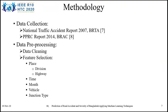Data collection was one of the most difficult tasks. Very few websites provide data on accidents in Bangladesh. After some research, we chose data from two sources: the National Traffic Accident Report 2007 from BRTA, and the PPRC Report 2014 from BRAC. After collecting the dataset, it was found to be unprocessed. To feed it to the machine learning algorithm, we cleaned unnecessary data, then picked five crucial features related to accidents: vehicle, time, month, junction type, and place, including division and highway.